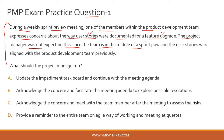The project manager was not expecting this since the team is in the middle of a sprint, and the user stories were aligned with the product development team previously. Essentially, during the sprint review meeting a team member has come back and said they are not happy with how the user stories were documented for the feature upgrade. The team was present when these user stories were getting documented, and now during execution they are raising concerns. What should you do as the project manager?